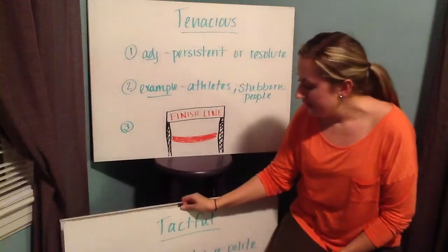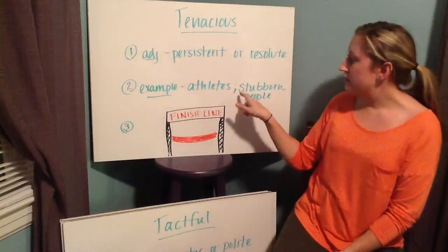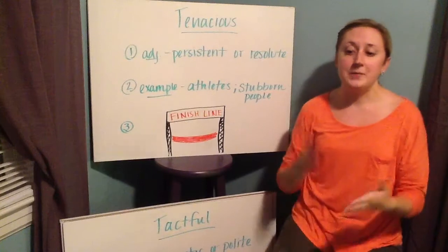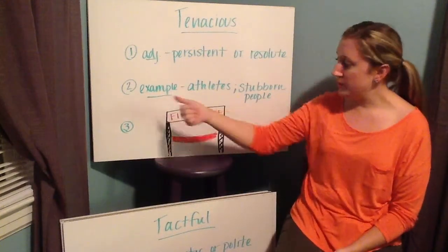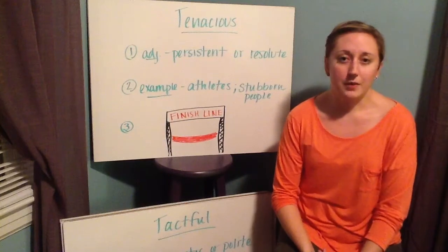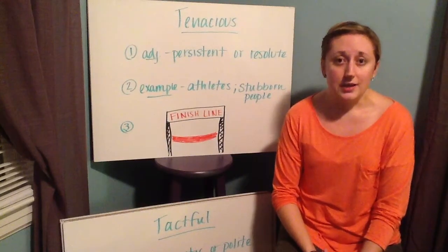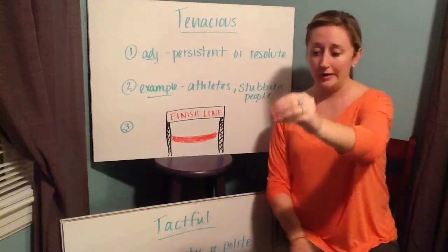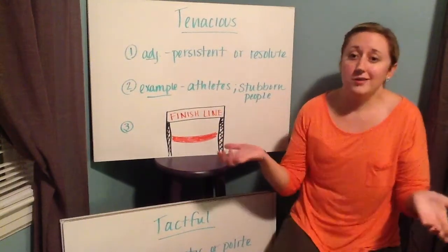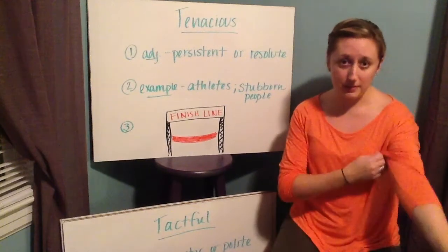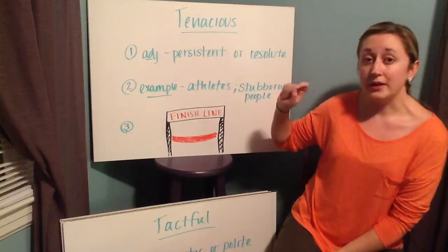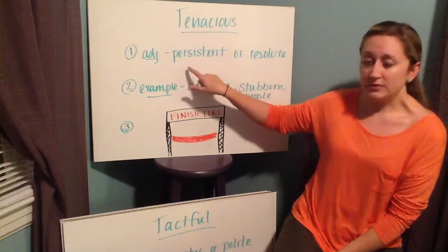Your next word is tenacious. When you think of tenacious, think of stubborn or persistent. The definition is persistent or resolute — and resolute means determined. Your examples are athletes. When you ask an athlete about a big race or game coming up, they're going to say "yes, I know I will succeed" or "I've been working really hard at my pitches" or "I've been practicing my backstroke for the meet on Saturday." Athletes are tenacious in their skills and practicing because they want to win, and they're resolute in winning.